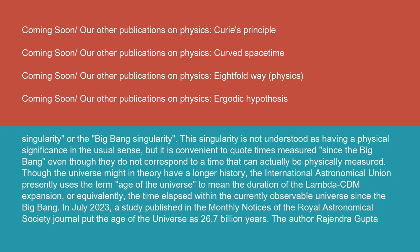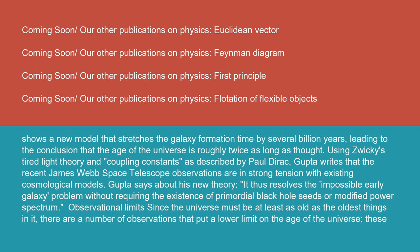In July 2023, a study published in the Monthly Notices of the Royal Astronomical Society journal put the age of the universe as 26.7 billion years. The author Rajendra Gupta shows a new model that stretches the galaxy formation time by several billion years, leading to the conclusion that the age of the universe is roughly twice as long as thought.